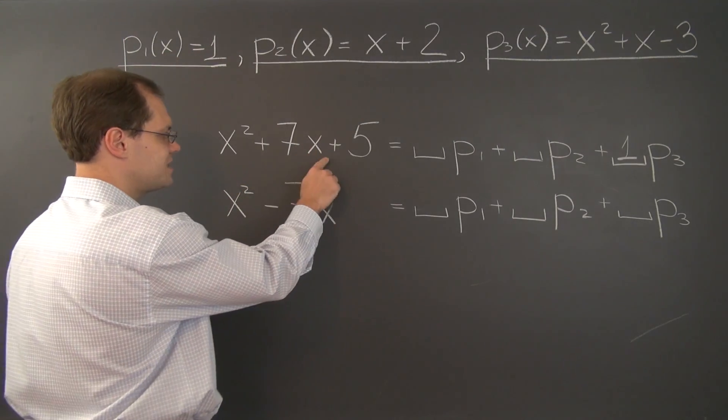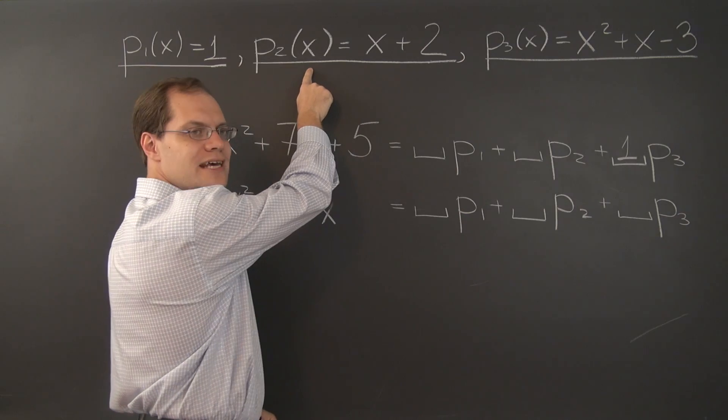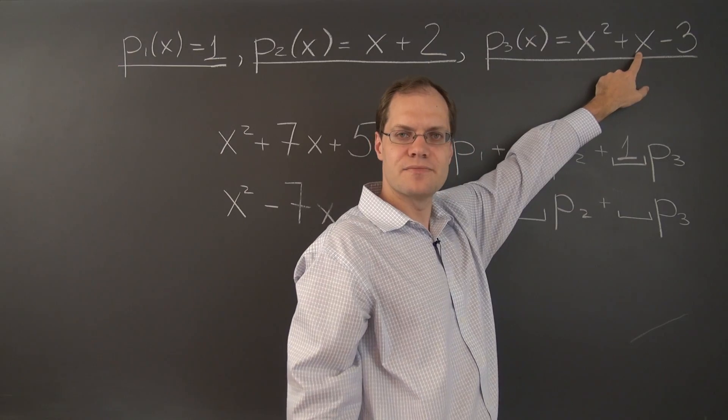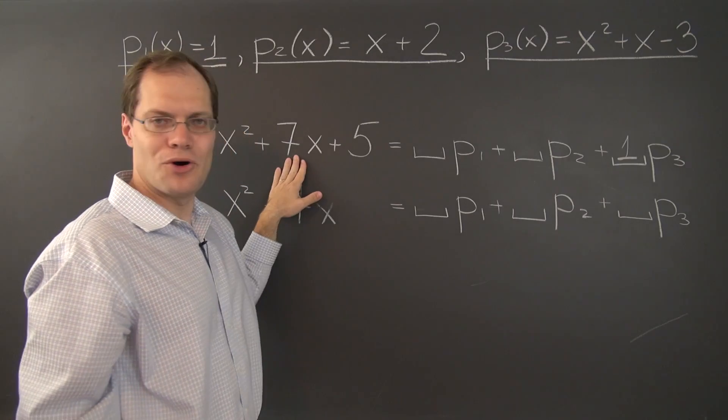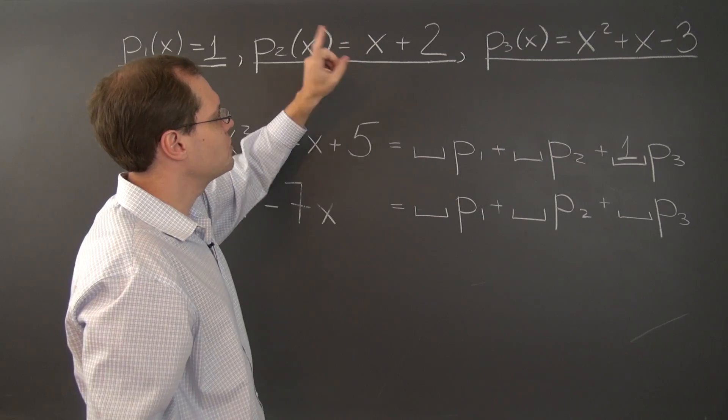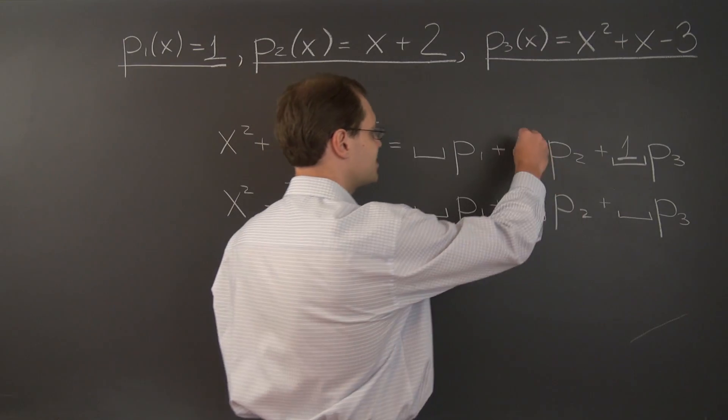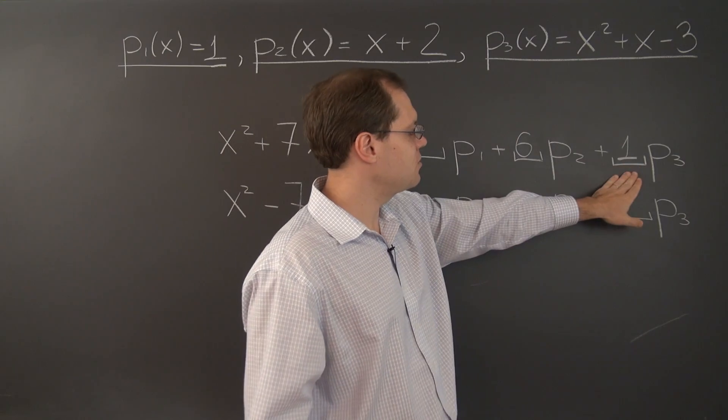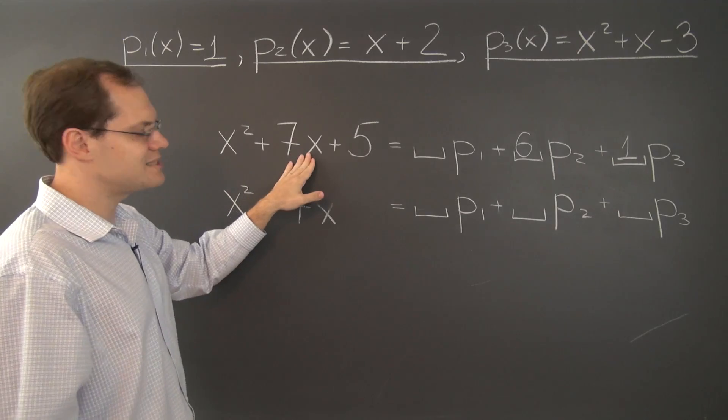So we have to match the coefficient of 7, 7x. But that doesn't mean that we should take 7 of P2, because we already have 1 of x from P3. So we only need 6 more of x. And because the coefficient of x in P2 is 1, we need exactly 6 more of P2. So 6 of P2, that's the second coefficient. So 1 of P3 and 6 of P2 takes care of x-squared and 7x.